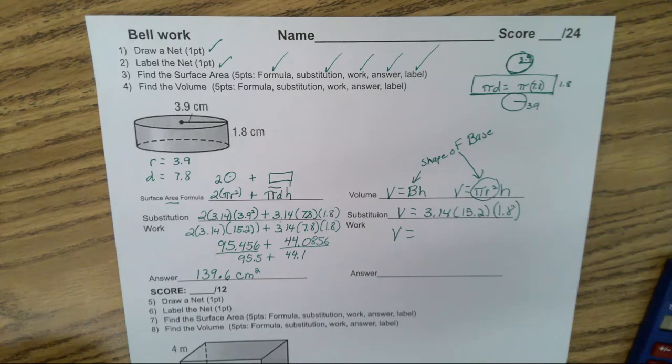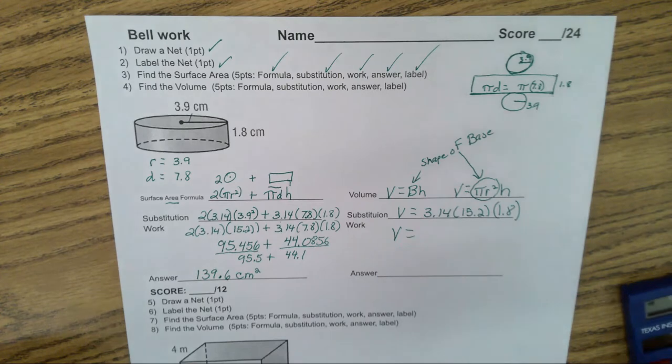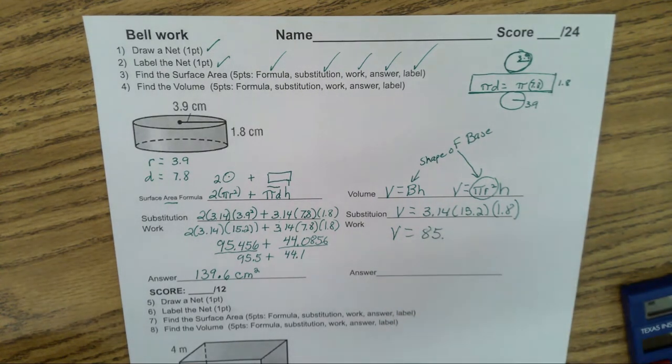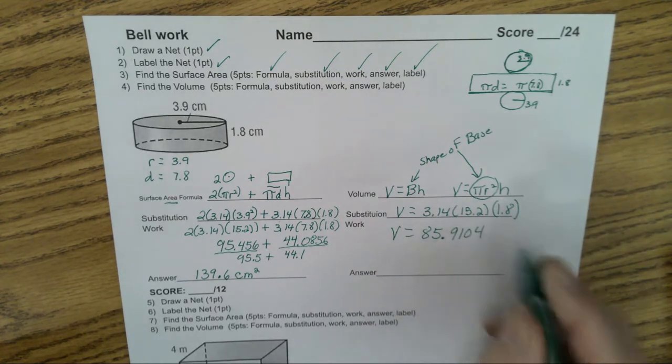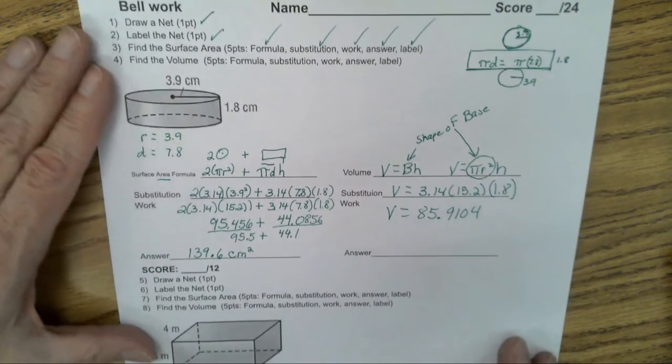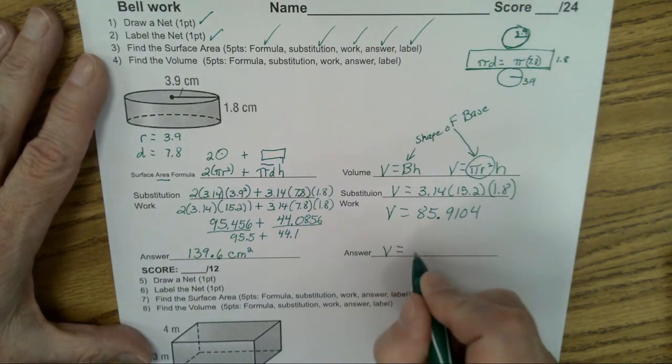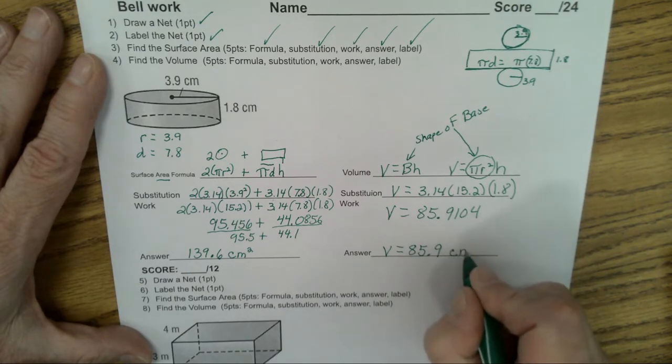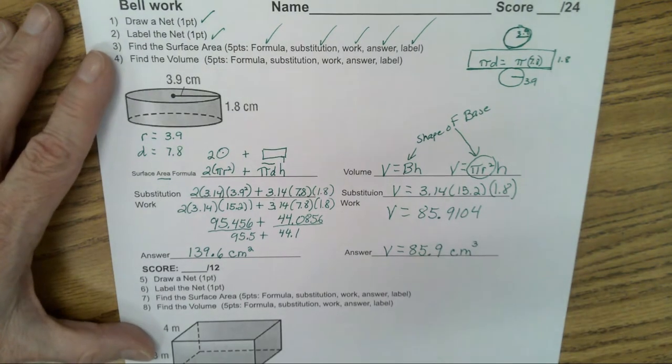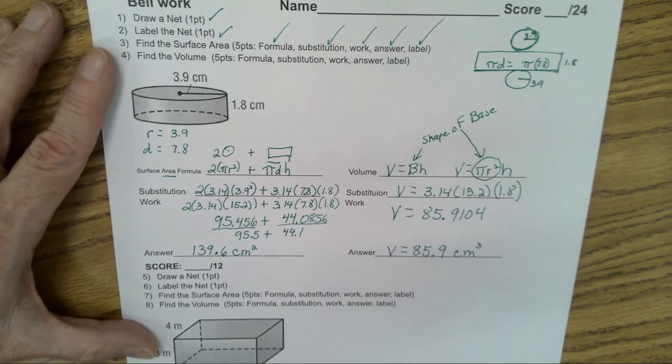So in the calculator, 3.14 times 15.2 times 1.8, 85.9104. So when I round it to the nearest tenths for my final answer, it's going to be 85.9 centimeters what? Cubed. Volume is 3 dimensional. It is a cube. Any questions on this?